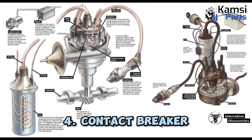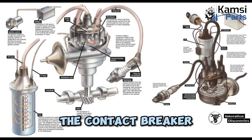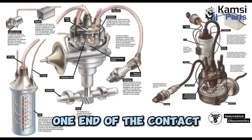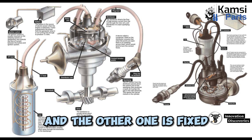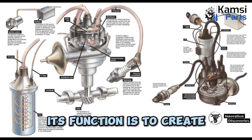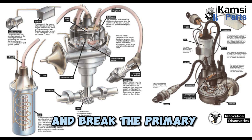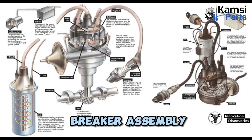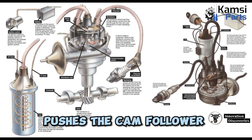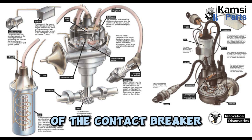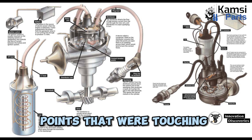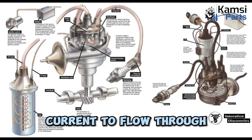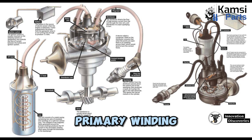4. Contact Breaker. The contact breaker is a mechanically designed breaker point. One end of the contact breaker is movable and the other one is fixed. Its function is to create and break the primary circuit current and is connected to the breaker assembly. As the cam's lobe pushes the cam follower of the contact breaker, the breaker's points that were touching each other separate and break the primary current flowing through the ignition coil's primary winding.